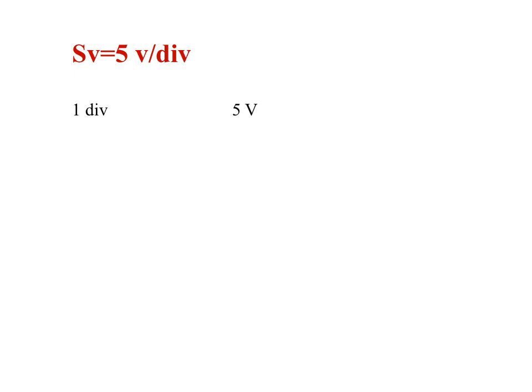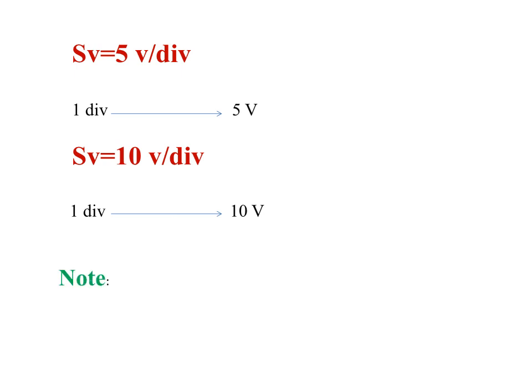The meaning of Sv = 5 volts per division is that each one division represents 5 volts. Another example: if Sv = 10 volts per division, then each one division represents 10 volts. The oscilloscope reads U from phase to ground.